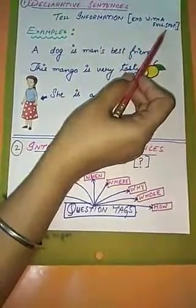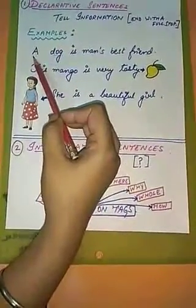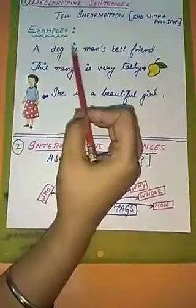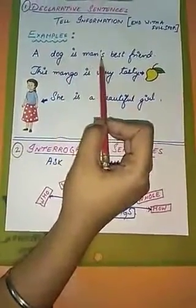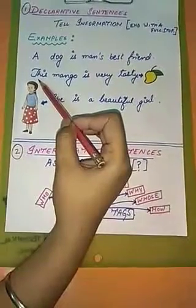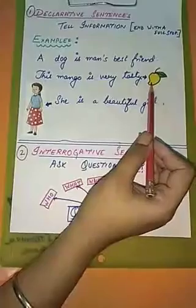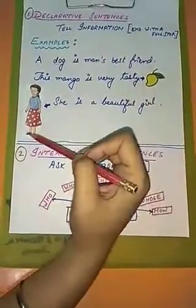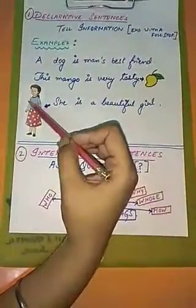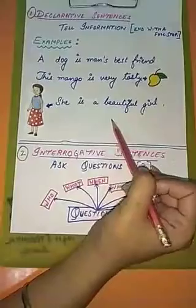Declarative sentences are those sentences which tell information about anything, and they end with a full stop. For example: A dog is man's best friend — here they are stating a fact. This mango is very tasty — here we are telling information about the taste of mango. She is a beautiful girl — here we are defining the beauty of a girl. These types of sentences state facts.